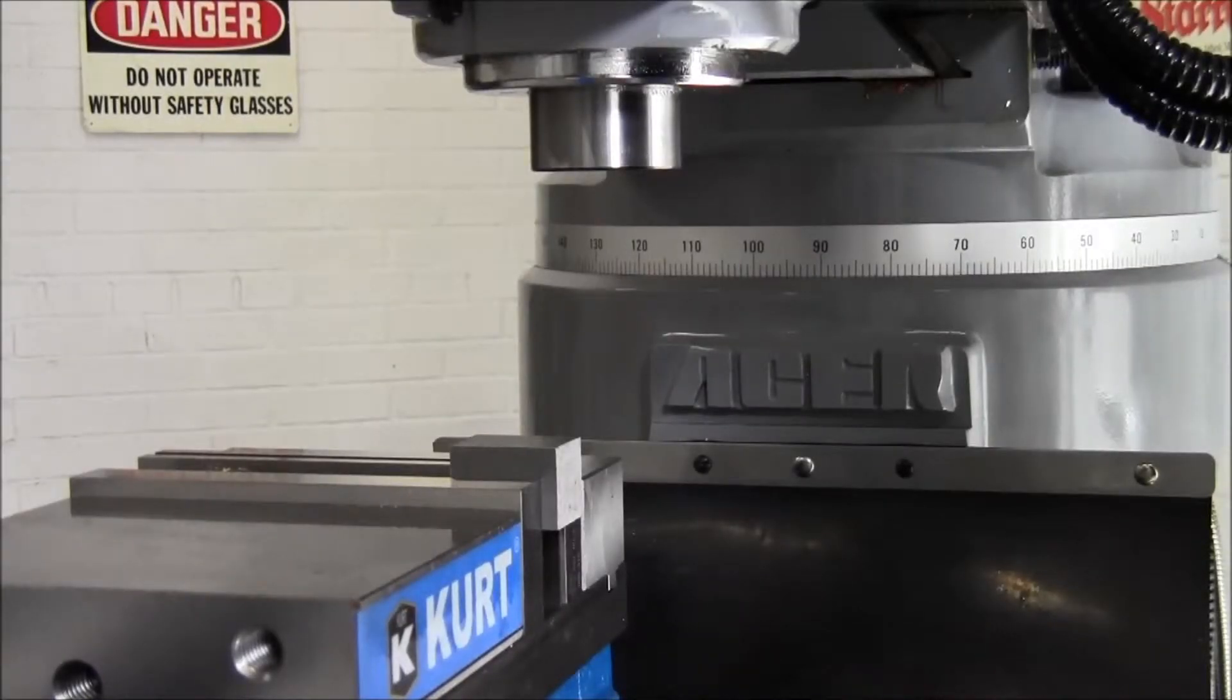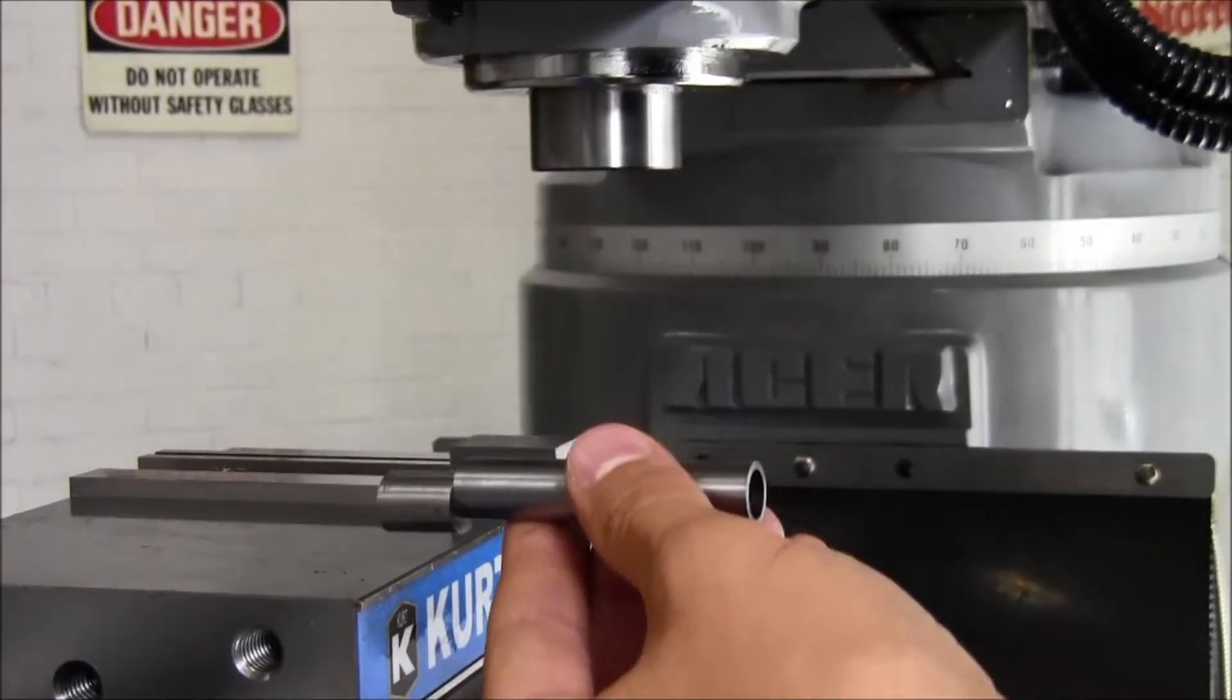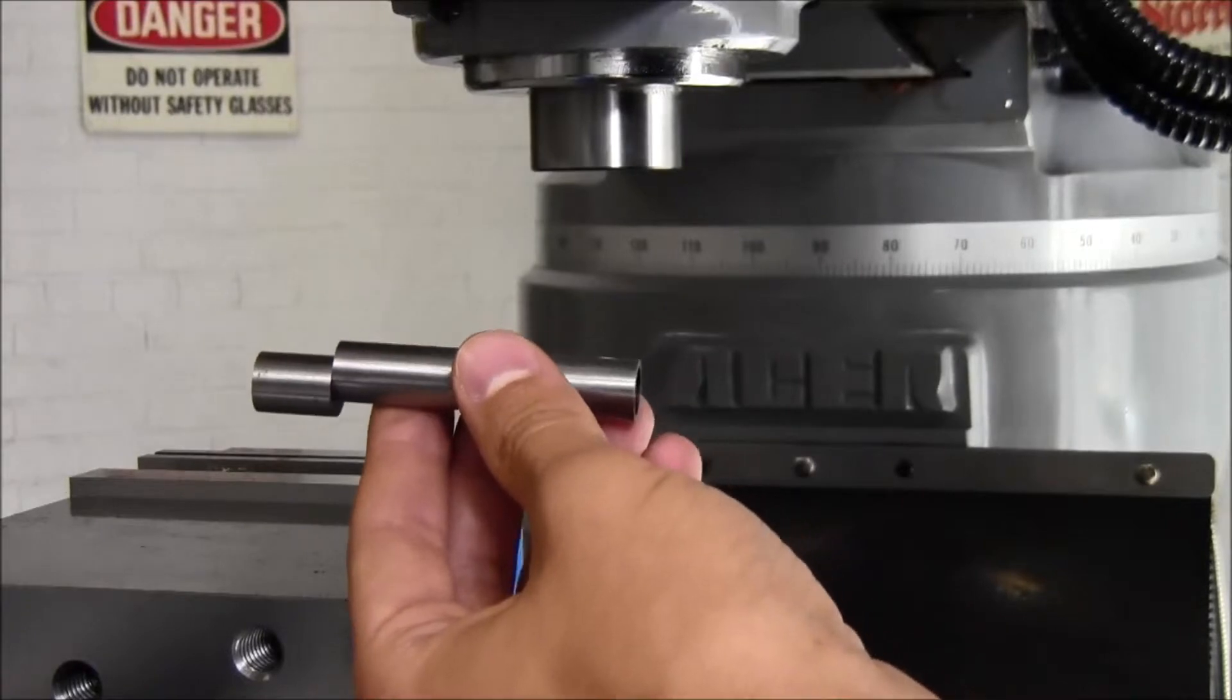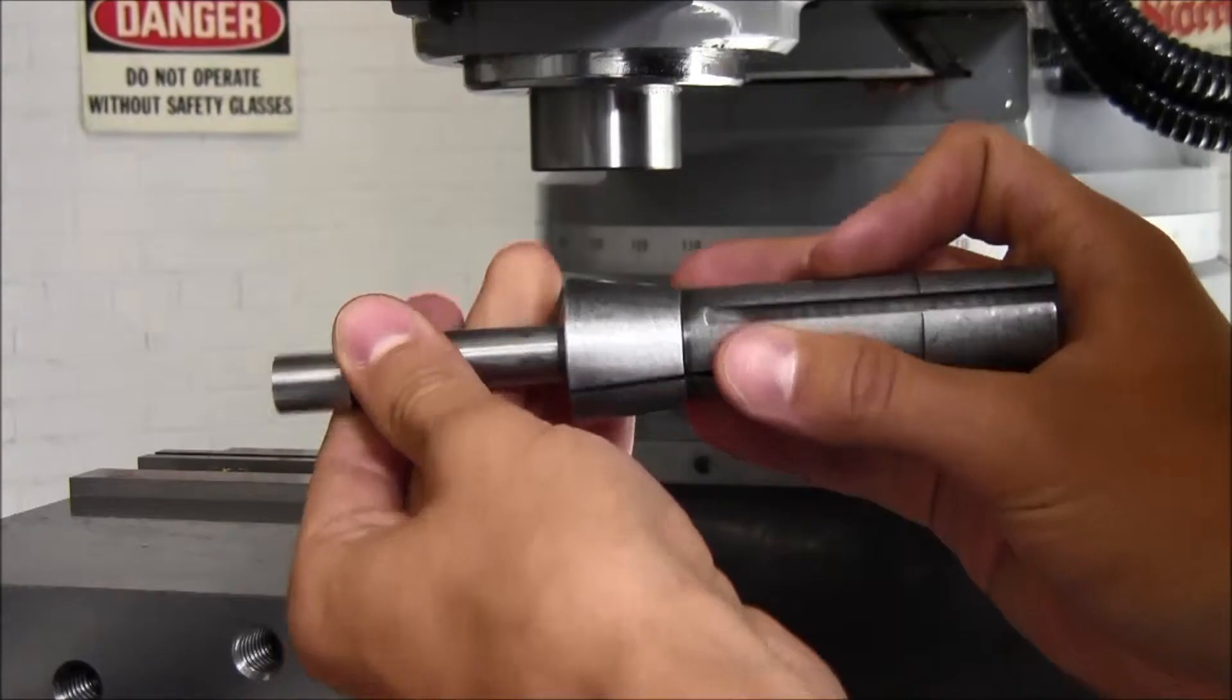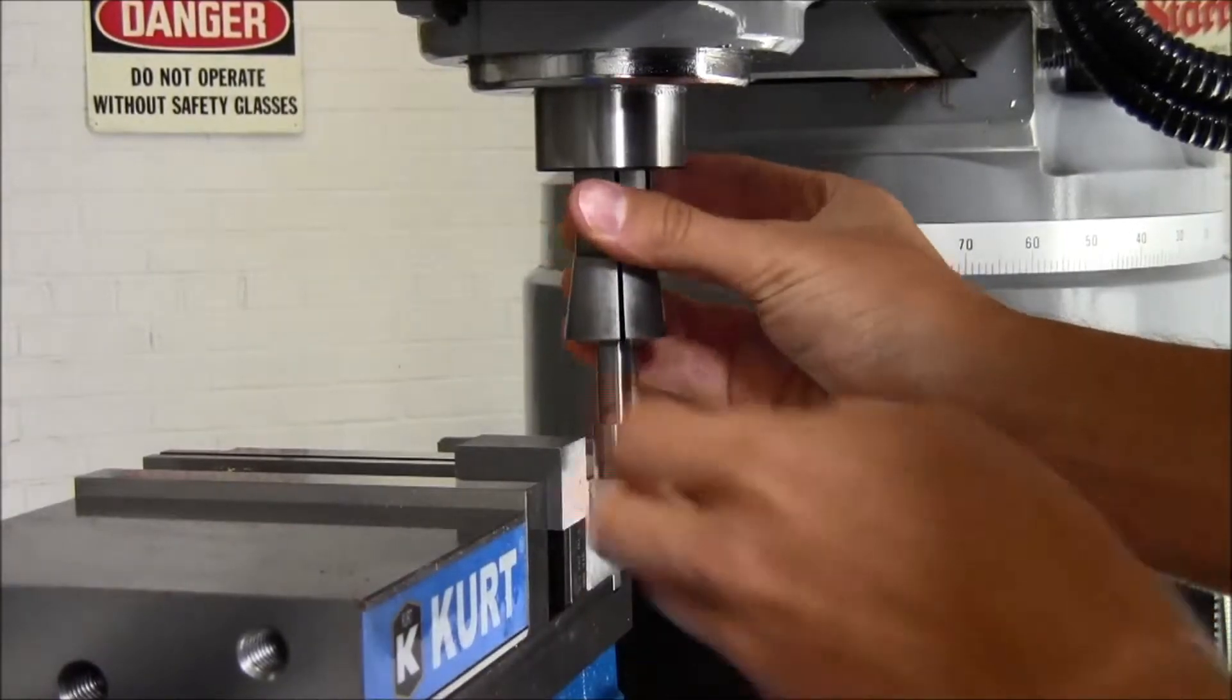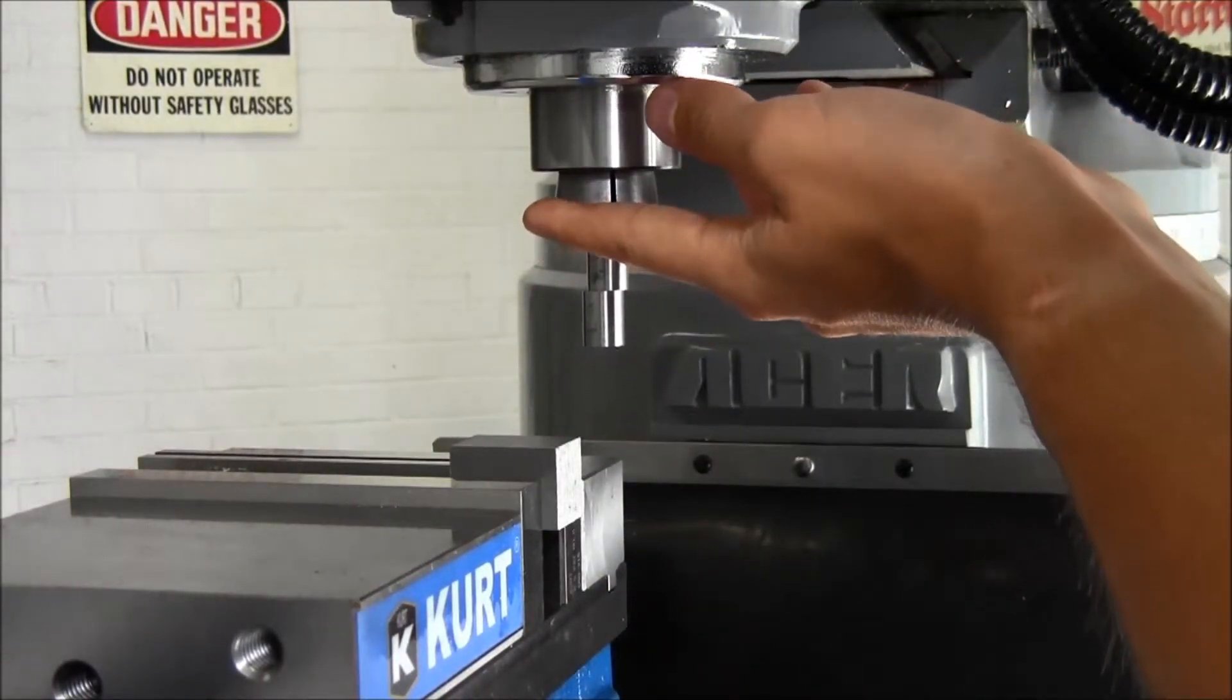Once you have faced your part, you will want to use an edge finder to zero out the analog dials and the digital readout for measurements in the XY plane. This edge finder can be found in the red cart and slips into a collet of the appropriate size. And then insert it into the spindle just like an end mill.